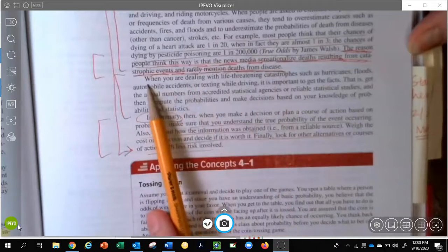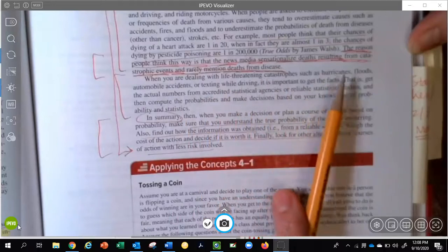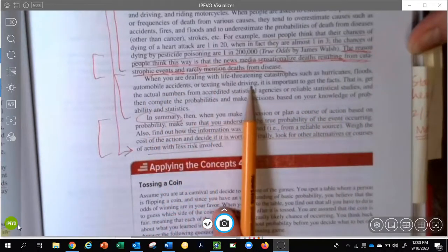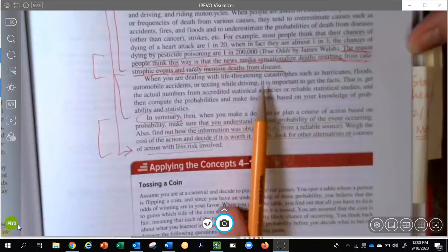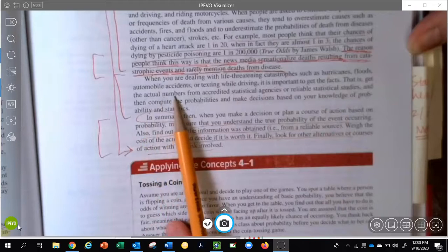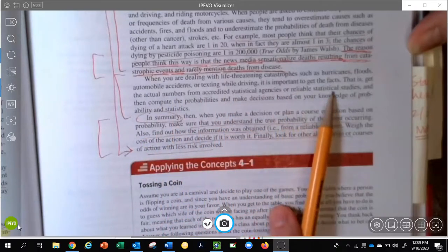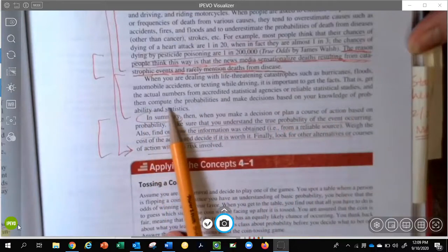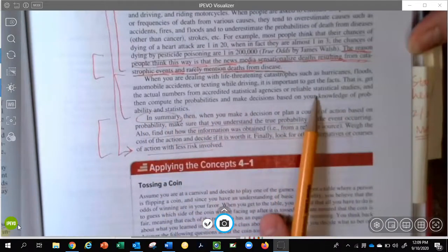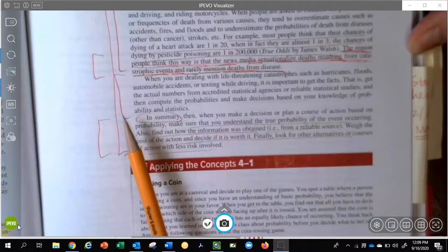Unless you're in a pandemic, then they'll probably mention it then. When you are dealing with life-threatening catastrophes, such as hurricanes, floods, automobile accidents, texting while driving, or during a pandemic, it is important to get the facts. That is, get the actual numbers from accredited statistical agencies or reliable statistical studies, and then compute the probabilities and make decisions based on your knowledge of probability and statistics.